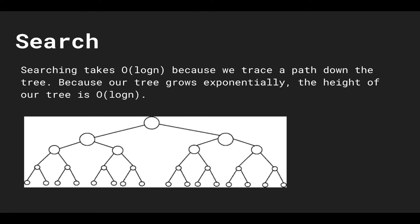Searching in a binary search tree is O(log n) because we trace a path down the tree. Since our tree grows exponentially, the height is O(log n). At each step we cut the search space in half and recurse one level down, so the entire runtime is O(log n).